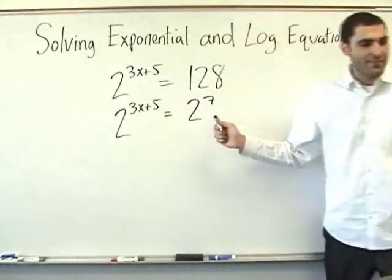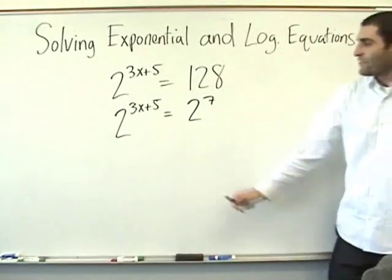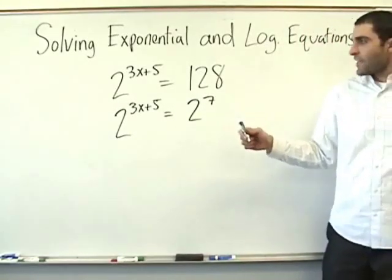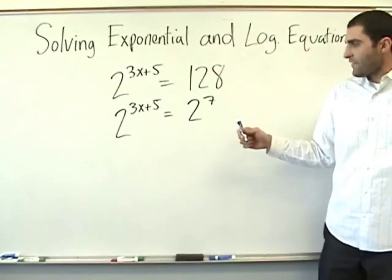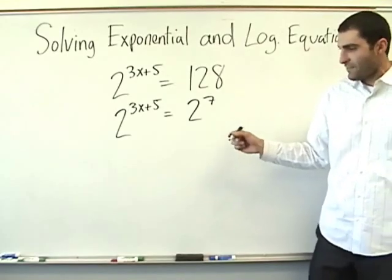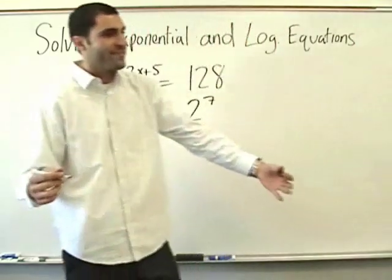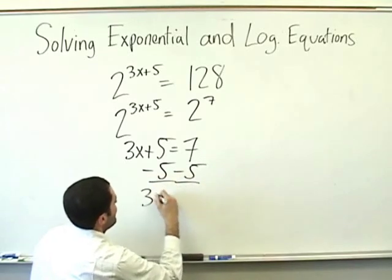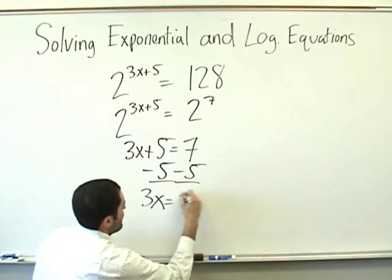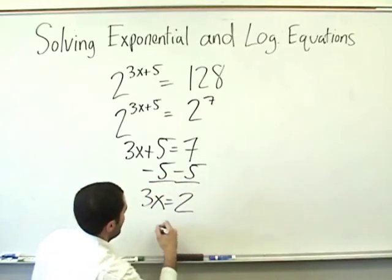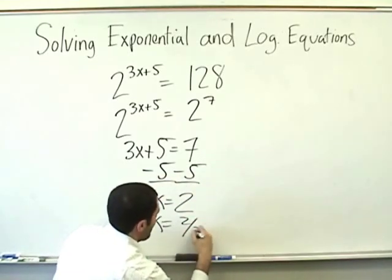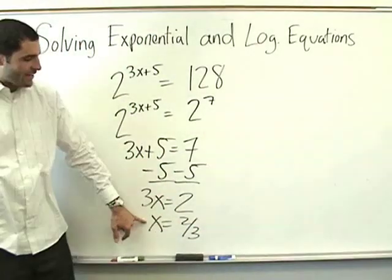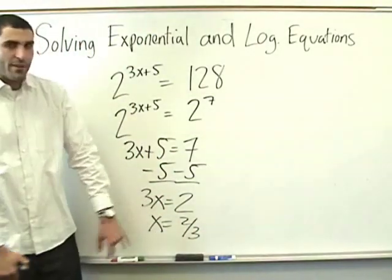So the exponent is 7. 3x plus 5 equals 7. 3x equals 2. x equals 2 thirds. Any questions?